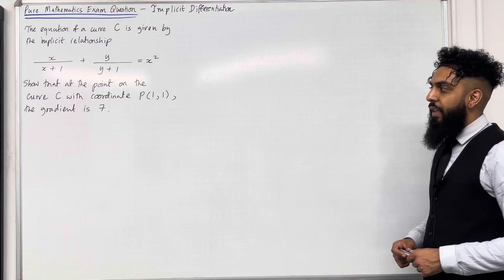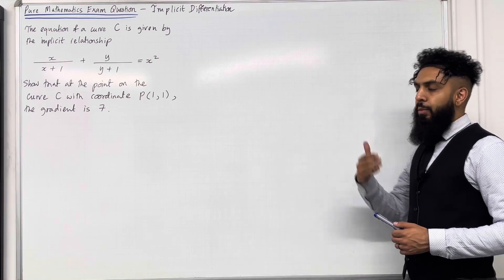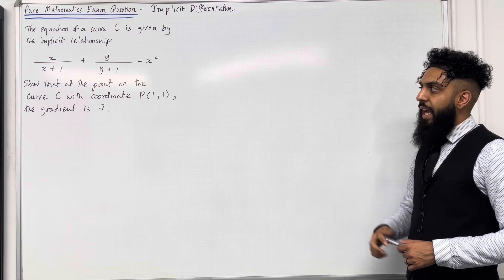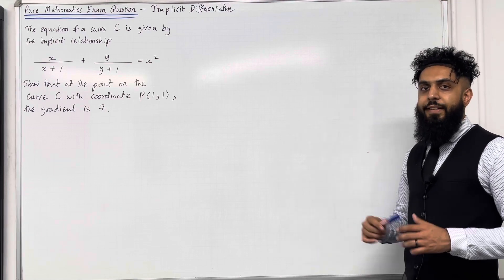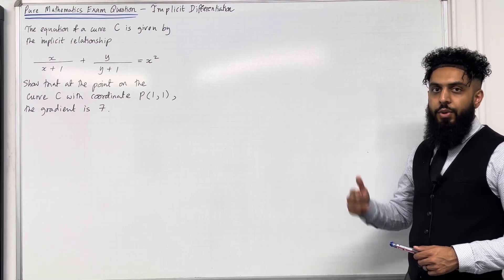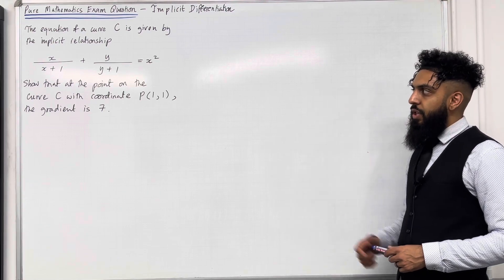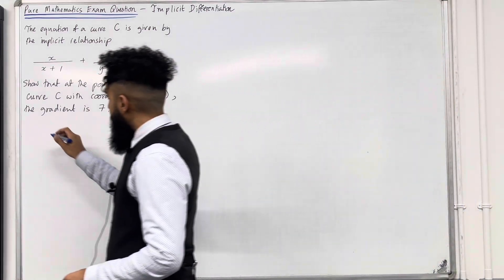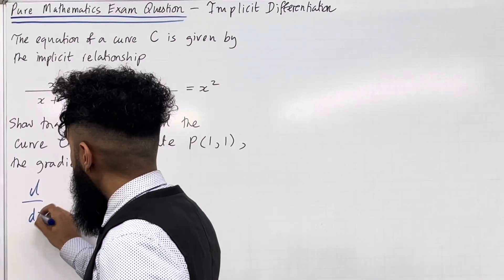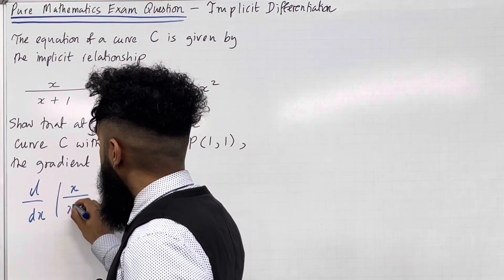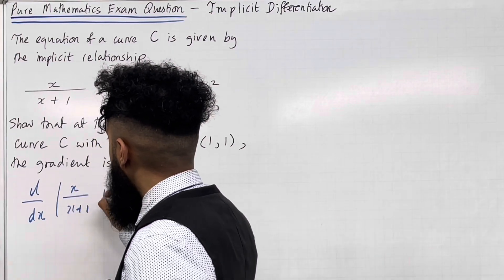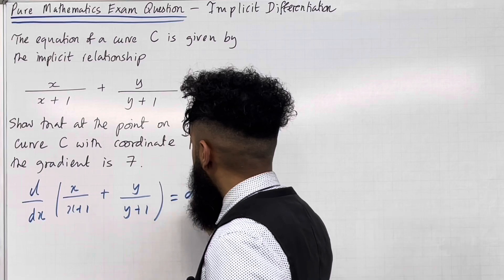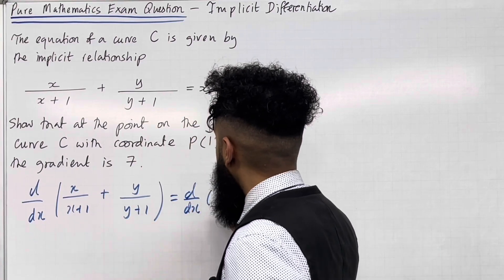Let's have a look at the solution. Essentially I'm trying to show that the gradient function dy over dx at the point P with x coordinate 1, y coordinate 1, is 7. To do this I need to apply implicit differentiation on this implicit equation. So I can start by taking d over dx of x over x plus 1 plus y over y plus 1, equal d over dx of x squared.